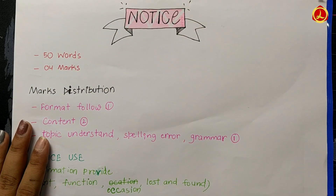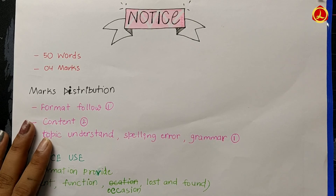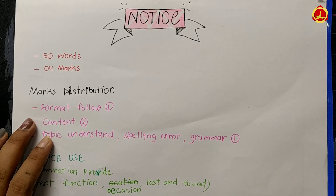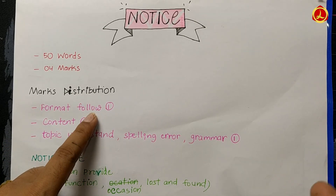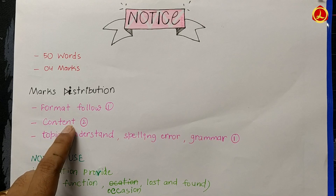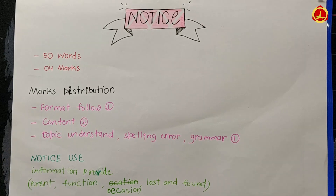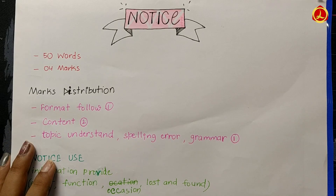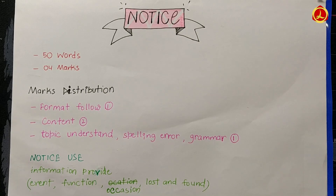Let's talk about the marks distribution in the notice. First, follow the format — for following the format, you will get 1 mark. Then you will get 2 marks for content, meaning how well you have understood the topic. And 1 mark is for expression, where spelling errors and grammar are checked.